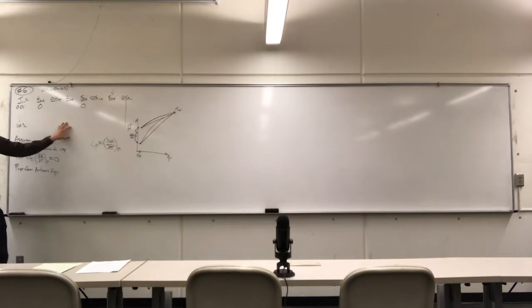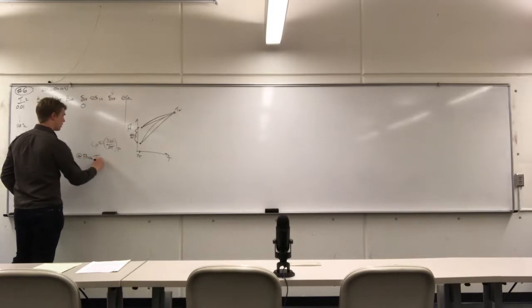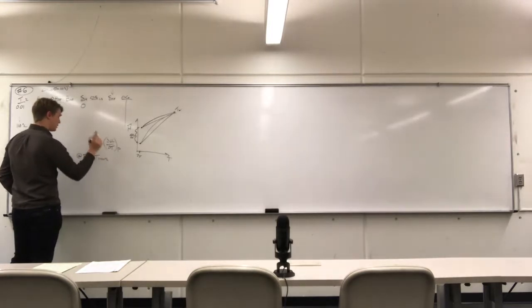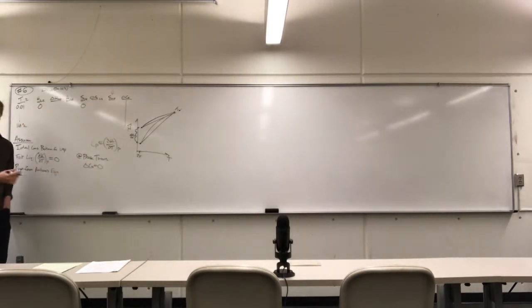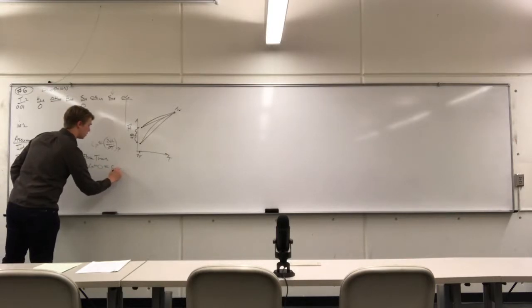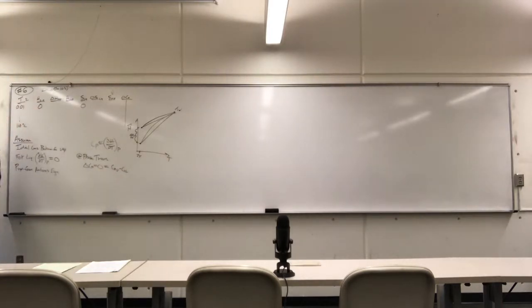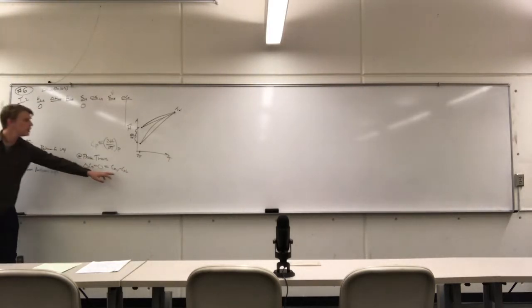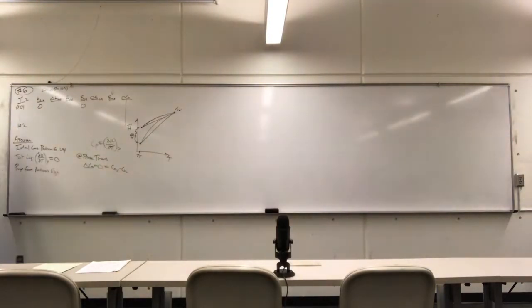The last thing we need to solve this is that at a phase transition, the delta G of the phase transition is equal to zero, which means the Gibbs of the vapor minus the Gibbs of the liquid is equal to the same thing. Delta G going from liquid to vapor — final minus initial — that's our delta G of the phase transition. So the delta G of any phase transition is always going to be equal to zero.